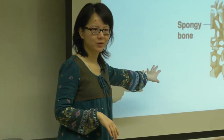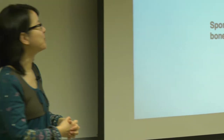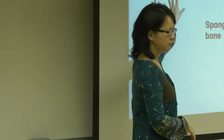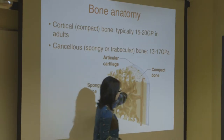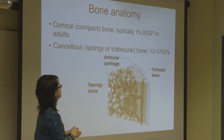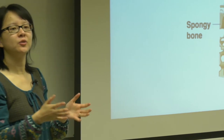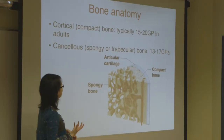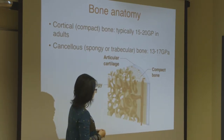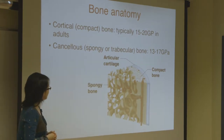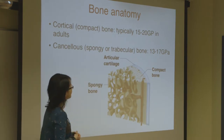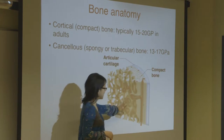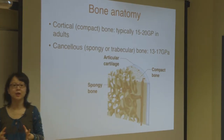First of all, can I have a show of hands of what kind of background you're coming from? Does anybody know about the structure of bone before? So just a quick recap. The anatomy of bone has two components. First is cortical bone — the stiff part on the periphery of the structure, with a Young's modulus typically of 15 to 20 gigapascals in adults. And then you've got the cancellous, or spongy bone, which has a trabecular structure and is softer — around 13 gigapascals in adults. The two types obviously form all your long bones and other bone structures in the body.